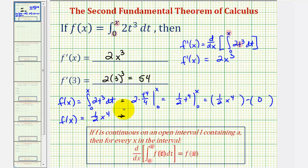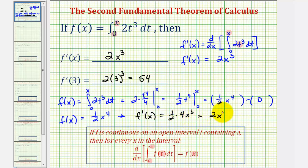So f of x is just equal to one-half x to the fourth, which means f prime of x, applying the power rule of differentiation, would be one-half times four x to the third, which is two x to the third. Notice how doing this the long way, f prime of x is still two x to the third.